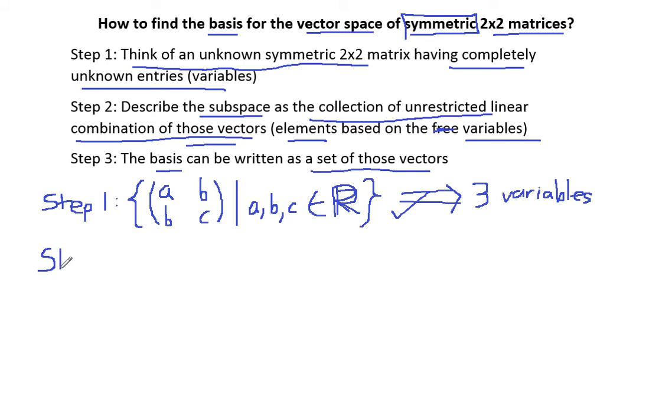Step 2: we will describe the subspace as a collection of linear combination of three vectors because you have three variables. Therefore we have three vectors. The linear combination of a, b, b, c where a, b, and c are real values can be written as: